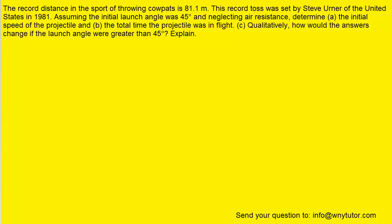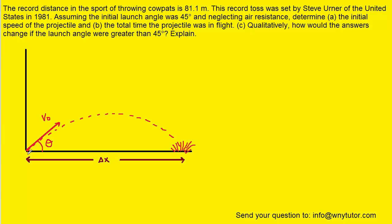We can begin by drawing a picture that represents the given information. Over here is where this projectile is initially launched with a velocity of V0 at an angle theta, and then it travels in a parabolic trajectory until it hits the ground, having traveled a displacement horizontally marked as delta x.